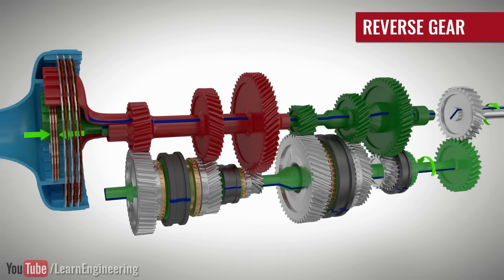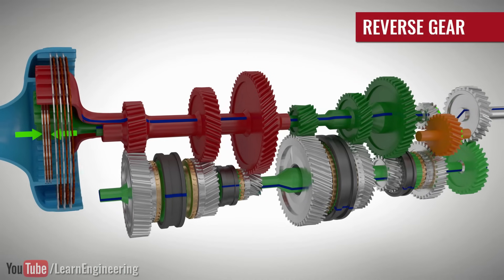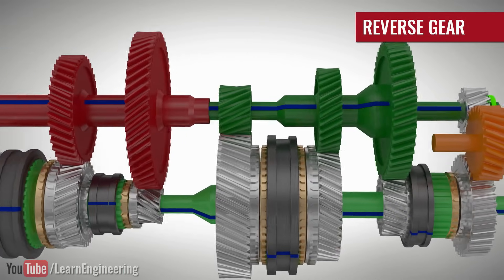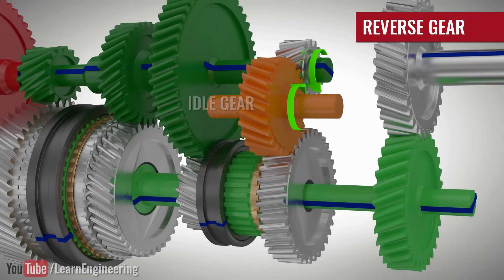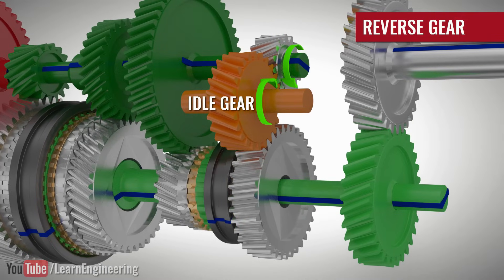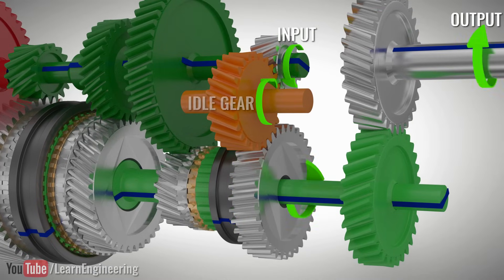To achieve reverse gear, a three-gear arrangement is used. Engaging the sleeve to the reverse gear will reverse the output rotation.